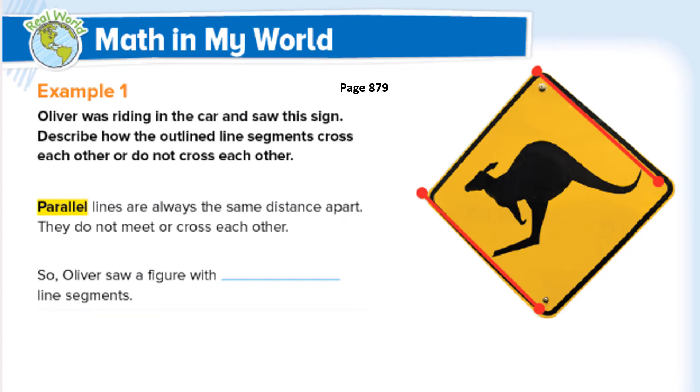So let's turn to page 879 in your math sheets. Oliver was riding in the car and saw this sign. Do you suppose he was in Minnesota when he saw that sign? Looks like he probably was in Australia, right? Describe how the outlined line segments cross each other or do not cross each other. Well, when we look at this line here and this line here, line segment, excuse me, they don't cross at all. And they're the same distance apart. So that would make them parallel line segments.